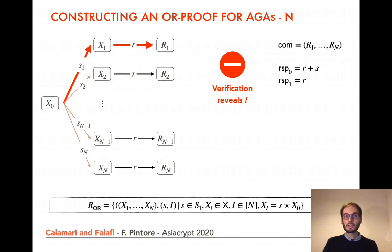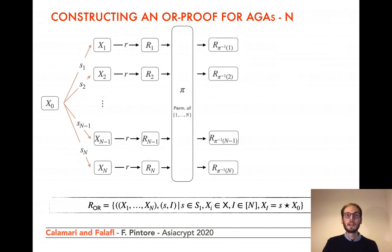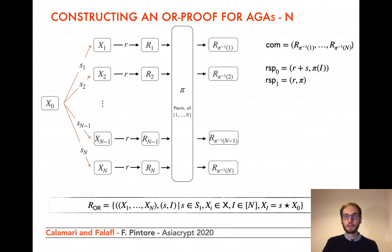To solve this issue, we can shuffle R1, ..., Rn — in particular, apply a random permutation pi to their indices. When the challenge is zero, the prover reveals R plus S and pi(i), the new index. When the challenge is one, the permutation is revealed. But even this protocol is not zero knowledge, because it leaks information about the index i when two verification keys are equal. Hence, shuffling alone is not enough — we need to mask the values.